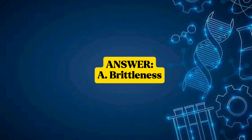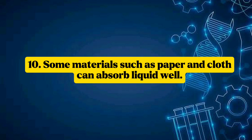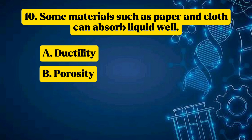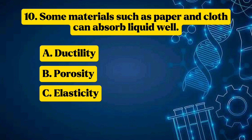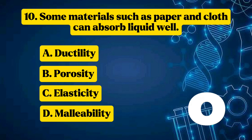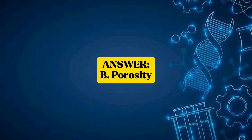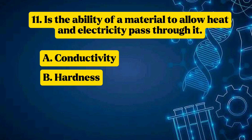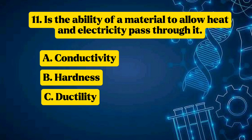Question 10: Some materials such as paper and cloth can absorb liquid well. Options: A — ductility, B — porosity, C — elasticity, D — malleability. Answer: B — Porosity. Question 11: It is the ability of a material to allow heat and electricity to pass through it. Options: A — conductivity, B — hardness, C — ductility, D — porosity. Answer: A — Conductivity.